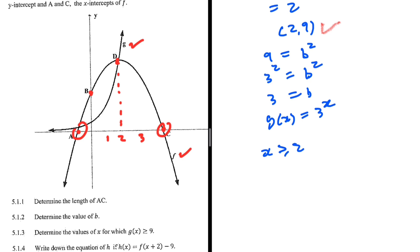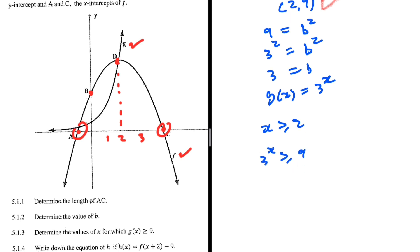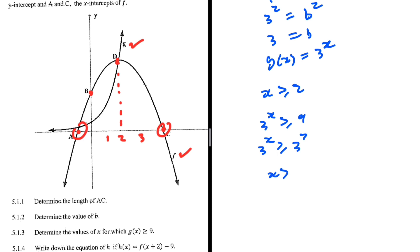We can also solve this algebraically. 3 to the power x is greater than or equal to 9, so 3 to the x is greater than or equal to 3 squared, which gives x greater than or equal to 2. That is 5.1.3.